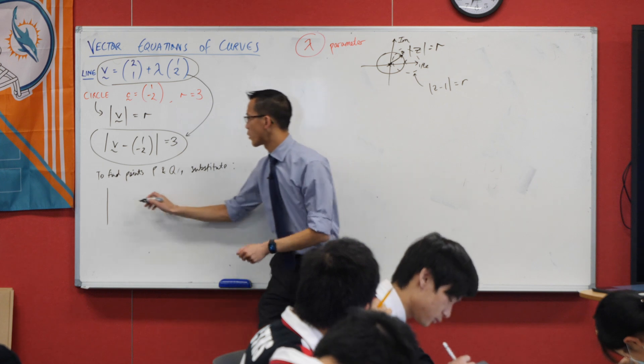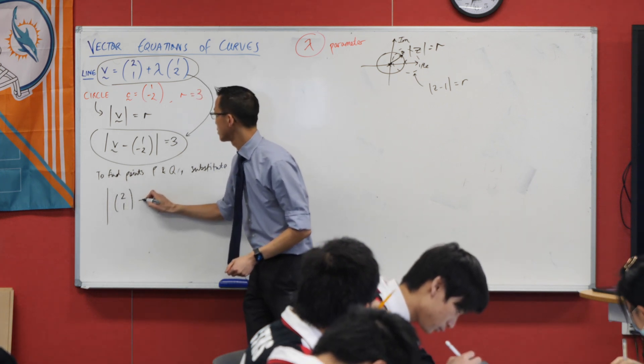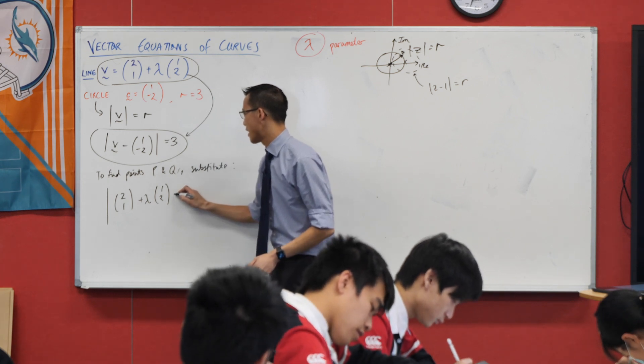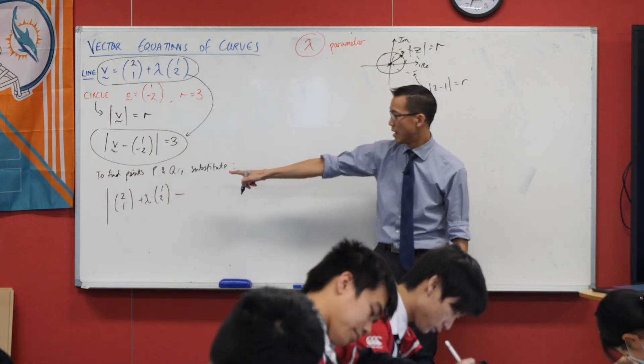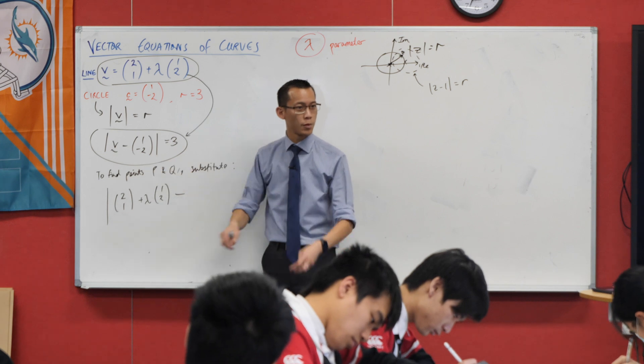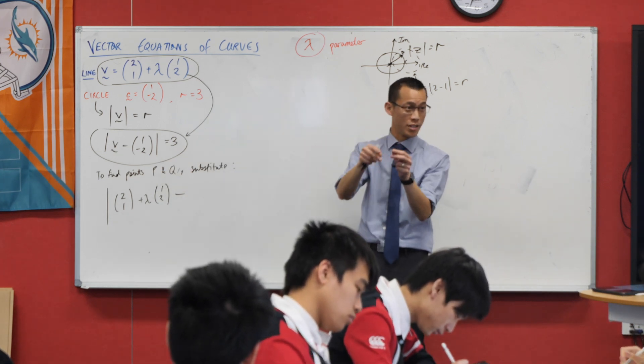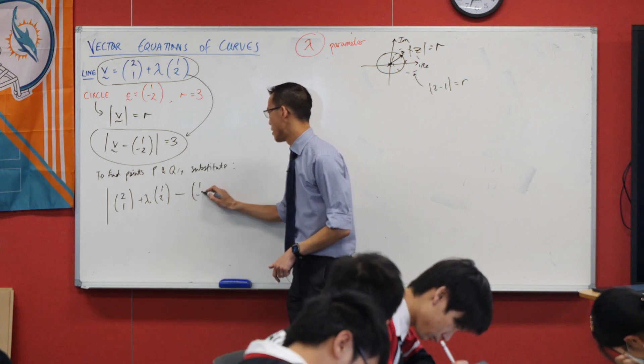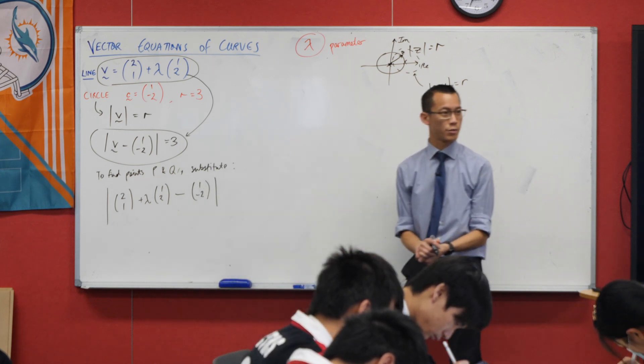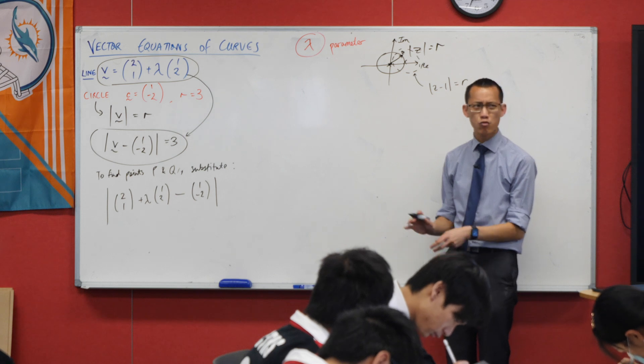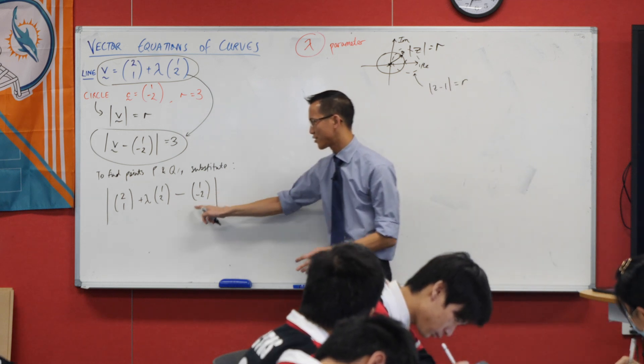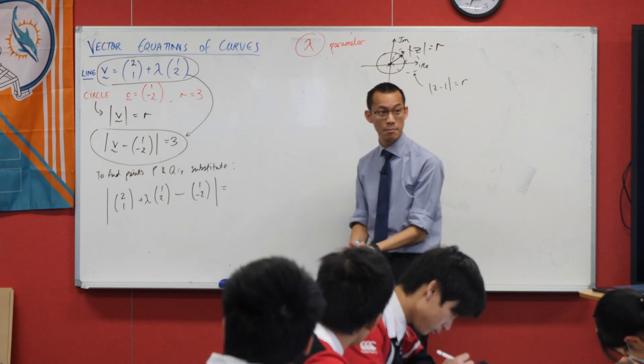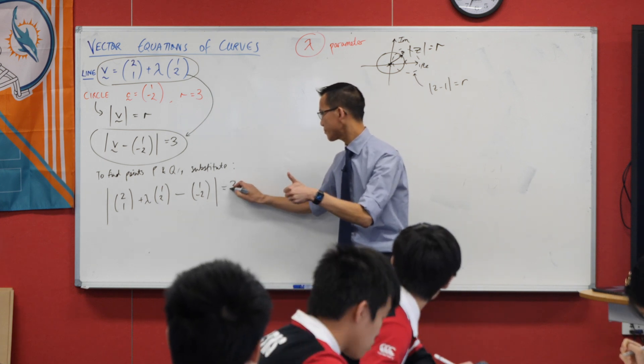All right, what do we have here? Here's the equation of, or the vector equation I should say, of my straight line. And then that's my v. And then here comes this offset that comes from the fact that my circle isn't centered on the origin, it's somewhere else. So I'm going to write 1, negative 2. What's that equal to again? 3.